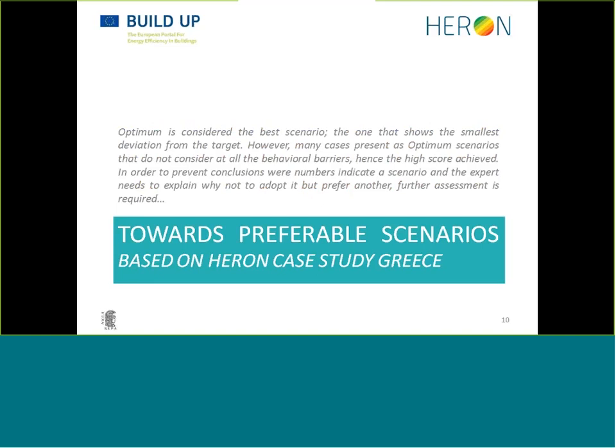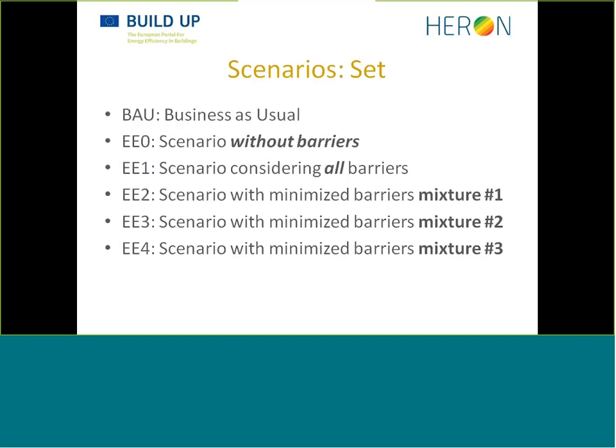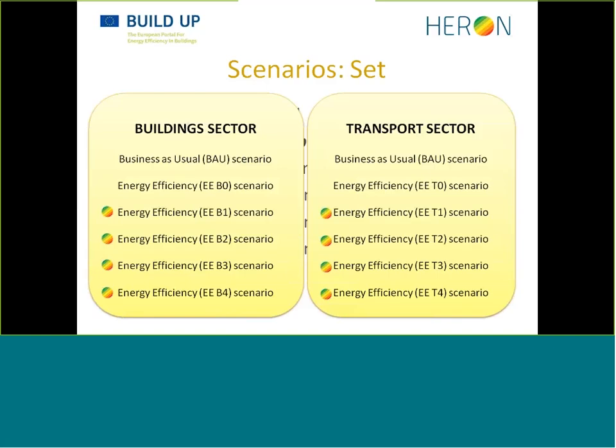So now we have our scenarios — some considering the end user's behavioral barriers, some dealing with them, and some not considering them at all. It was time for evaluation to see what is worth keeping, proposing, and supporting. As a quick reminder, we have: BAU; EEB0 that doesn't consider any behavioral barrier; EEB1 that considers all barriers but doesn't try to minimize any; and EEB2 to EEB4 providing three different minimization options using different technological mixtures. For the building sector, scenarios are named EEB0 to 4, and for transport, EET0 to 4.